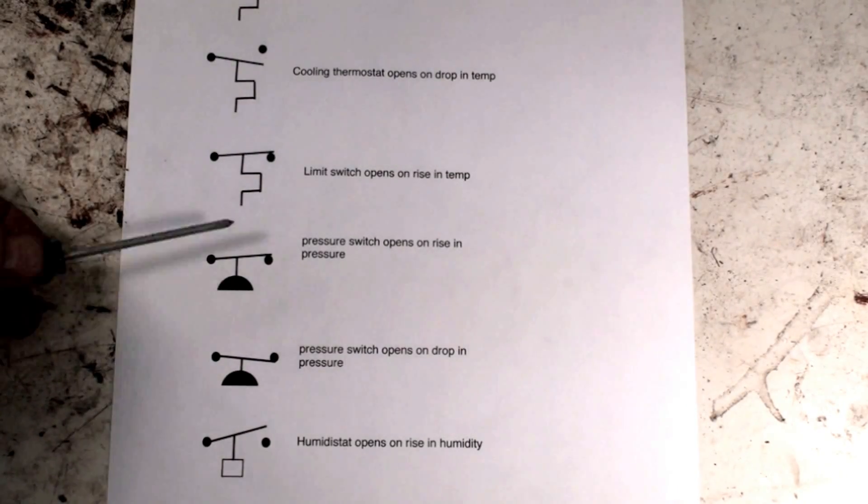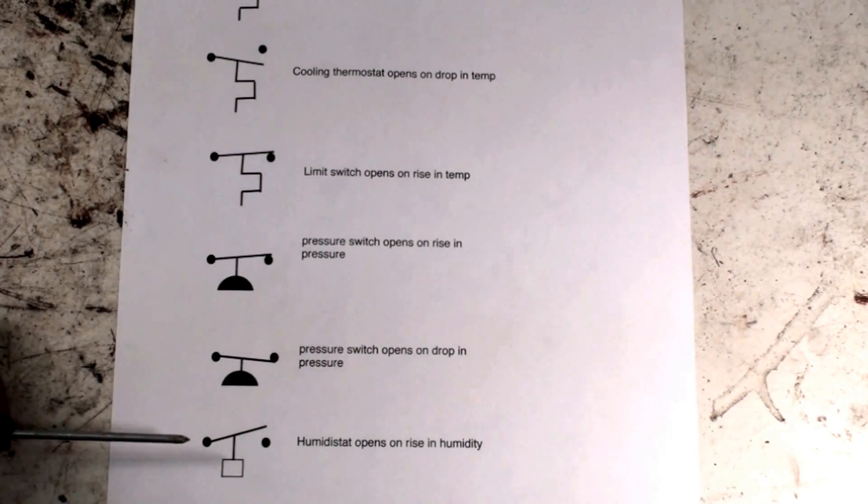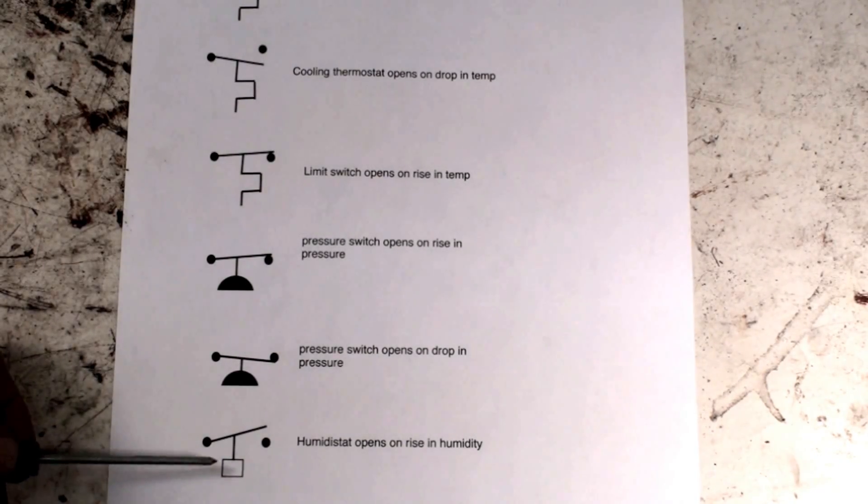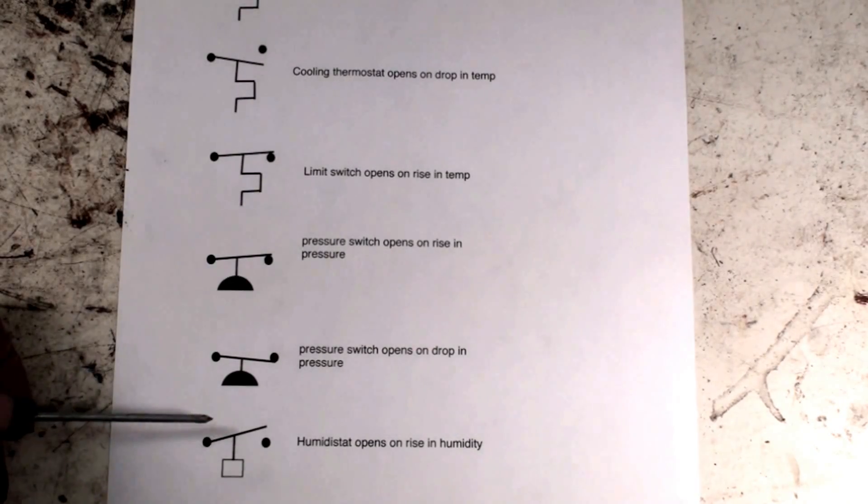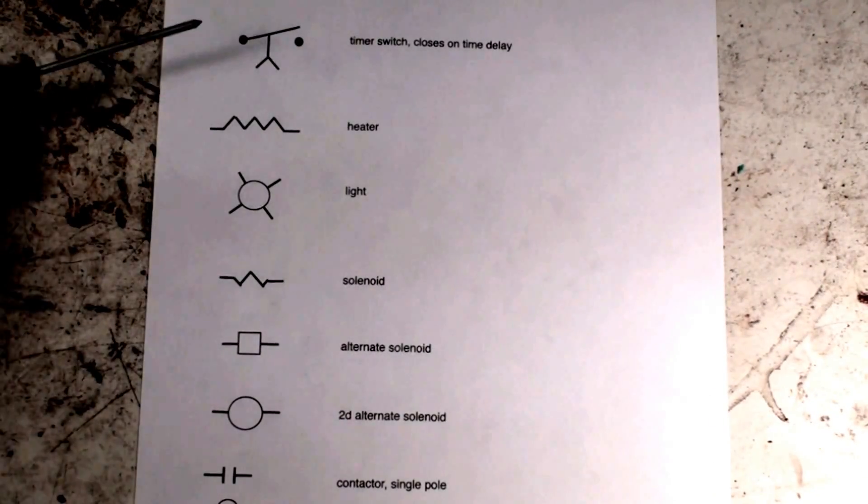This here is an operating control - it's a humidistat. Now humidistats are fairly simple little beasts. They're designated by that little square down there, and so it opens on a rise in humidity.